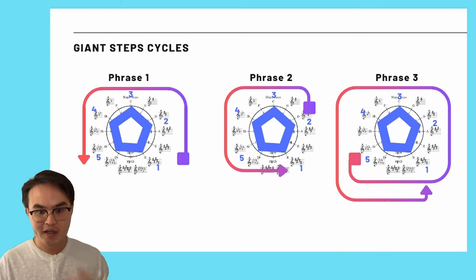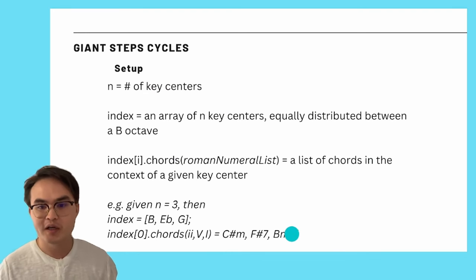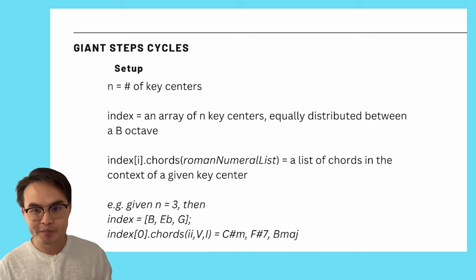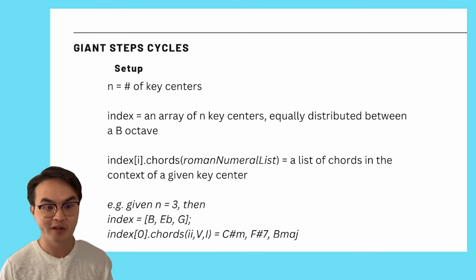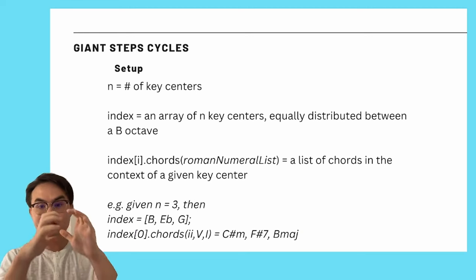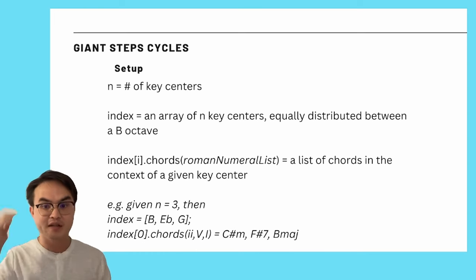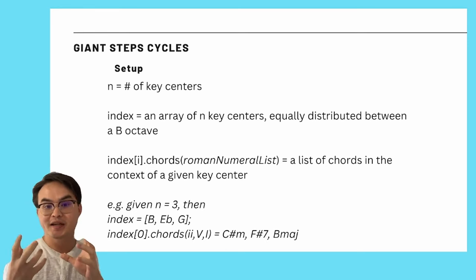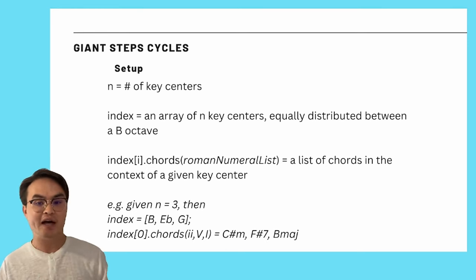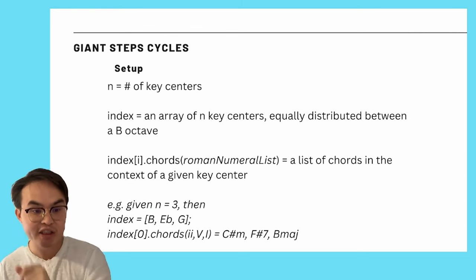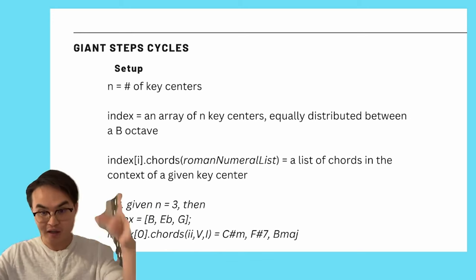And now I'm saying plus or minus one, and all that math brings us to algorithm time, where if we have a variable n, and we'll just say n is the number of key centers, three key centers, four key centers, n equals three, n equals four. And that n will determine a list, an array of n key centers that we'll call the index. And so we'll say if we're in key one, that might be B, and then two might be E flat. And you can kind of see this at the bottom, if n equals three, then index is B, E flat, and G, which are the first, second and third keys of Giant Steps.